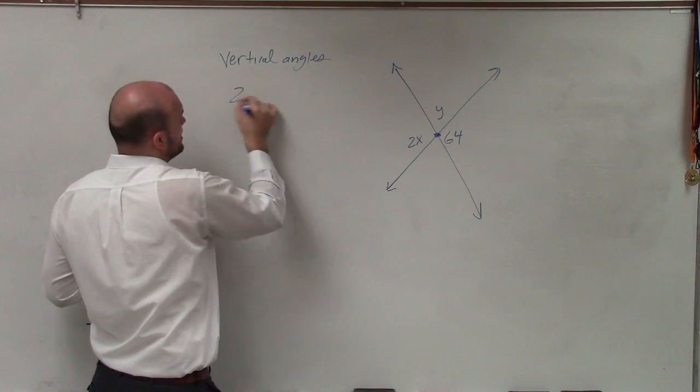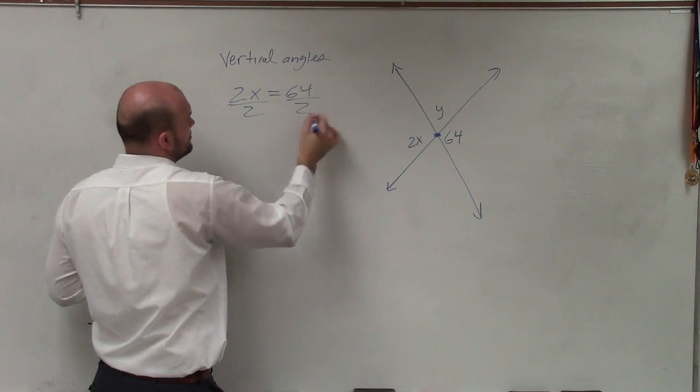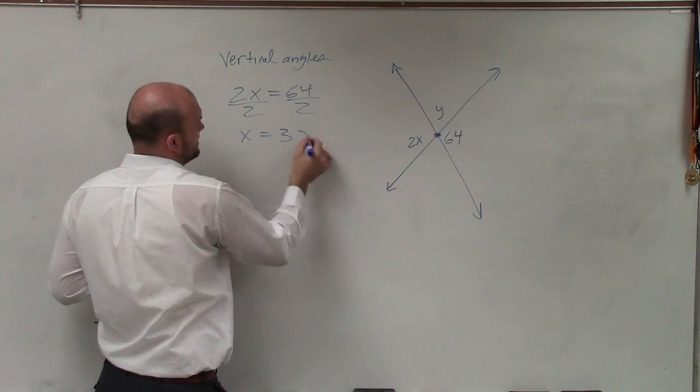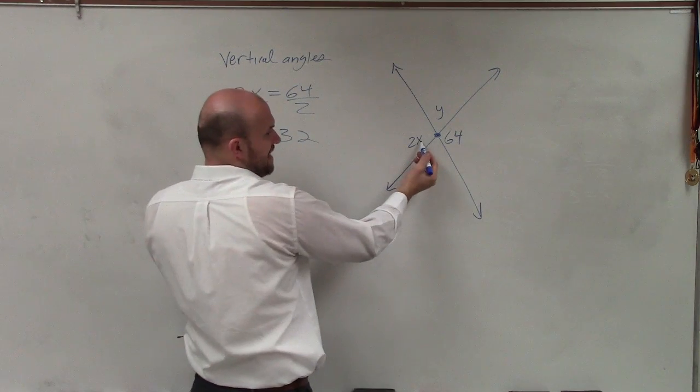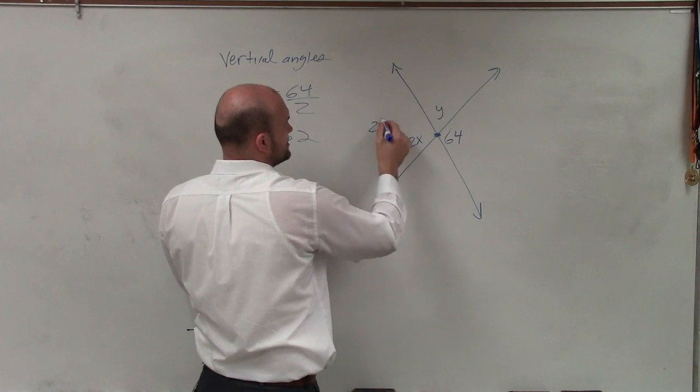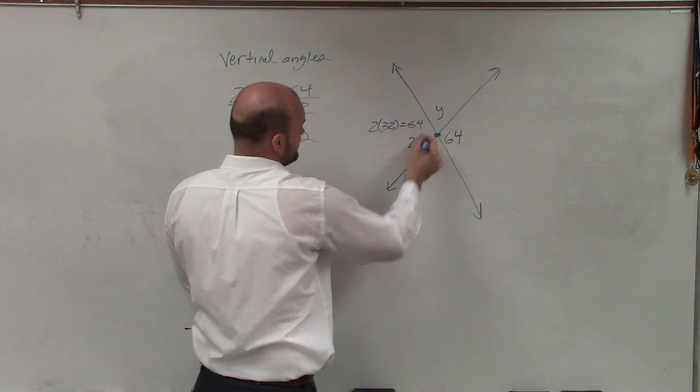And since they're equal in measure, I can write the equation 2x equals 64, divided by 2, divided by 2, x equals 32. So now that I know x equals 32, I can evaluate for this angle. And I could say 2 times 32 equals 64.